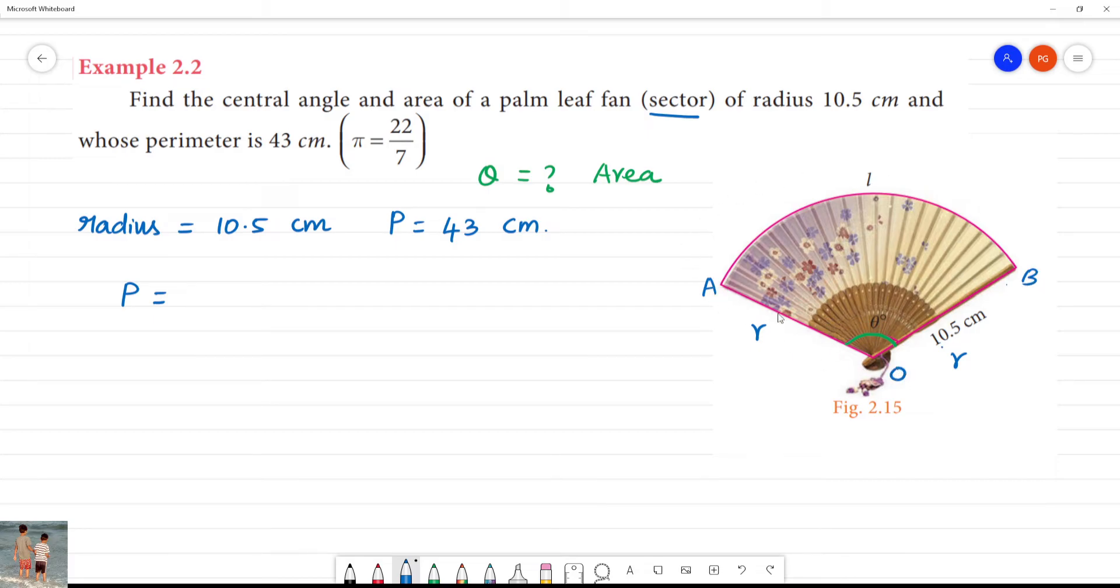This is the total length, the perimeter of the arc: 2R plus L, or L plus 2R. Length of the arc plus 2R, that is perimeter. Now we have radius, perimeter. We have length. Length is equal to perimeter minus 2R.